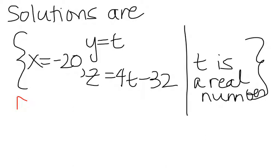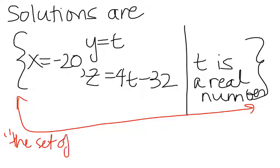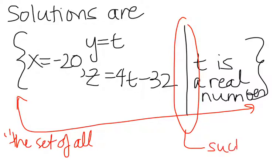So the brackets just mean the set of all, right? And then this line here is, so you'd read, you know, so it's the set of all x equals negative 20, y equals t, z equals 4t minus 32. And then you get to this line, and you read it as such that, or satisfying the condition that. And then you continue reading, t is a real number.